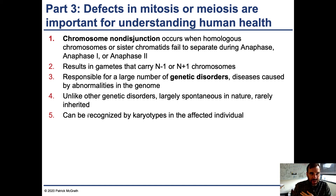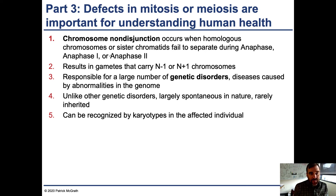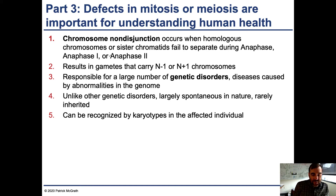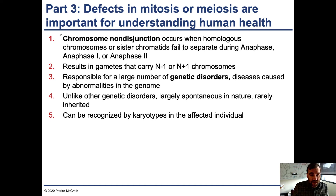The last part of this lecture covers sections 8.1 and 8.2 because it ties in nicely to this chapter. Defects in mitosis and meiosis are important for understanding human health, and you've learned enough about these processes to understand some of the things that affect human disorders and also miscarriages.